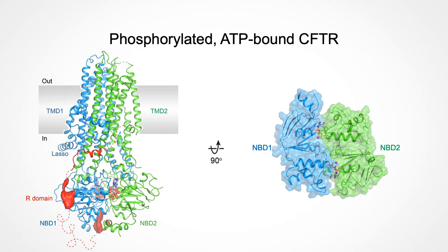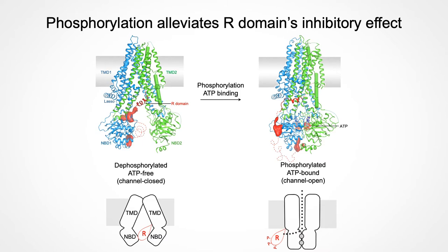We then solved the structure of CFTR in its phosphorylated ATP-bound state, which corresponds to its open state. What we observed is that upon phosphorylation, the R domain dislocates from between the two TMDs and NBDs to interact with the outside of NBD1, which allows ATP to bind and cause conformational change and channel opening. By comparing the two structures, we now have a clear picture of how CFTR is regulated by phosphorylation. When the R domain is dephosphorylated, it acts as a steric hindrance for any potential conformational change, while after phosphorylation, the addition of negative charges on the R domain allows its relocation to the outside of the channel, which favors ATP-induced channel opening.